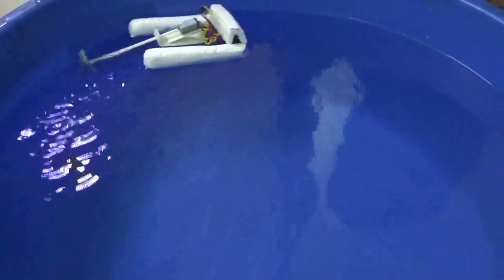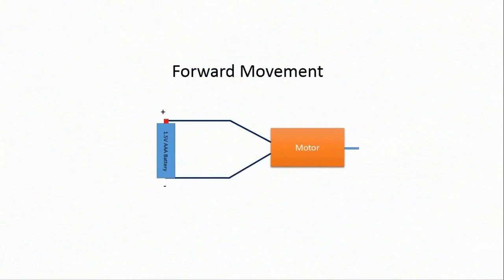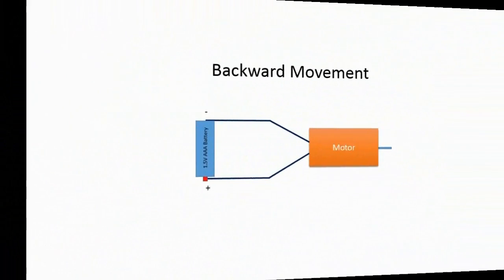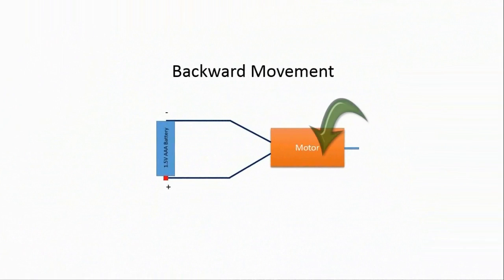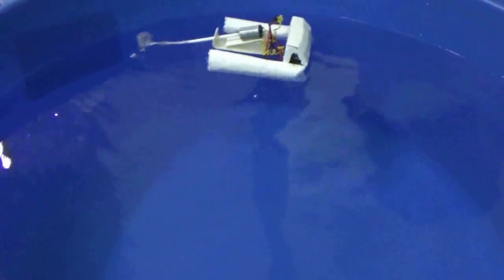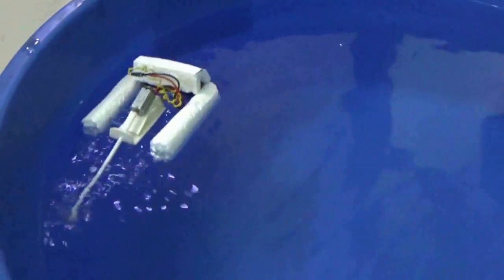One thing to say here, the voltage is given such that the motor rotates in a direction where it moves forward. If I interchange the connection, the motor will rotate in reverse direction and it will move backward like this.